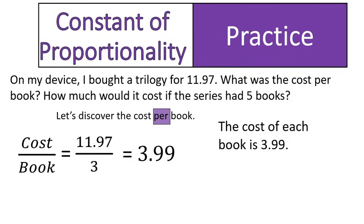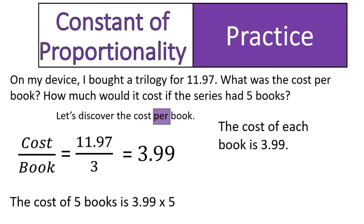These are different things we call the same exact thing. The cost of each book is $3.99. So to discover the cost of five books, I would take the cost of one book — $3.99 — and multiply it times five. One book is $3.99; five books is $3.99 times five. And when I do that, I discover a five-book series would cost $19.95.